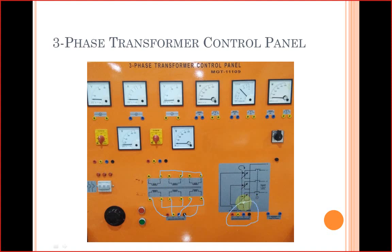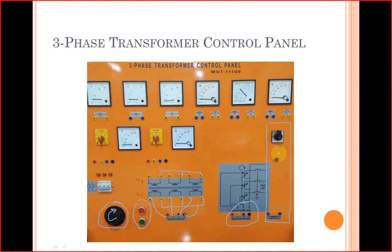There is a three-phase variable power supply controlled by a variable knob. A power relay with a green button to turn on and a red button to turn off the supply is present. There is also a variable load and one replaceable fuse on the panel.